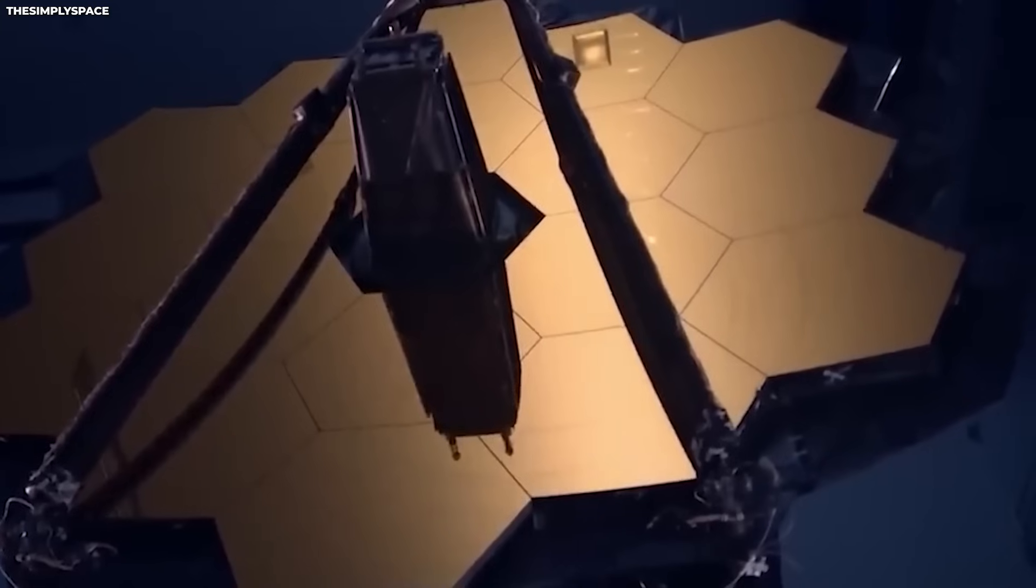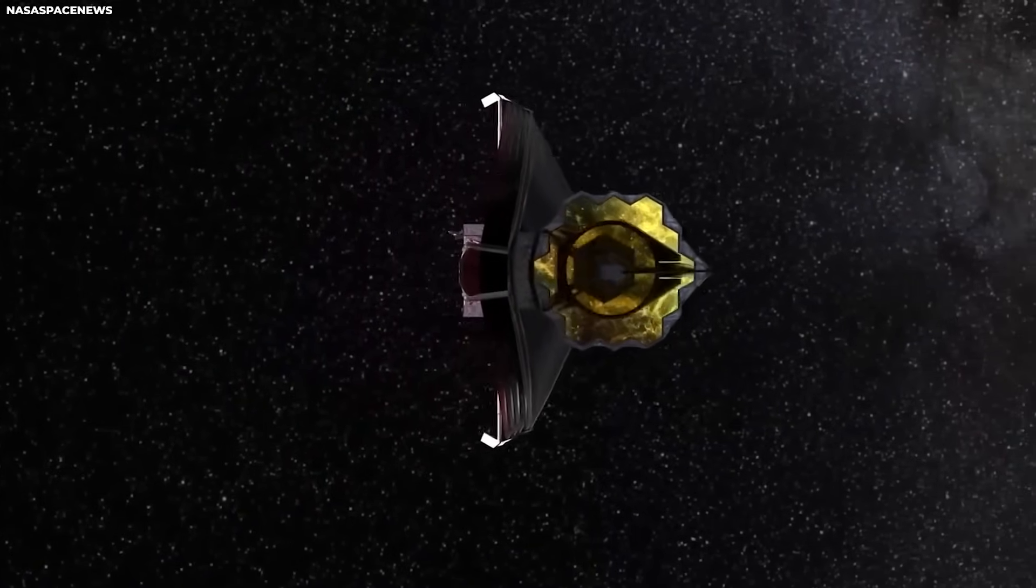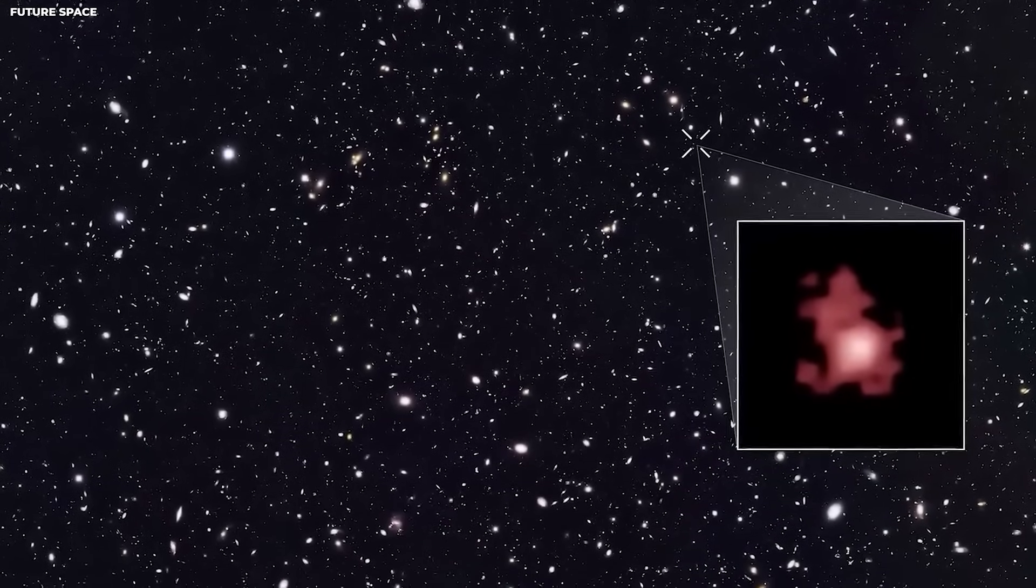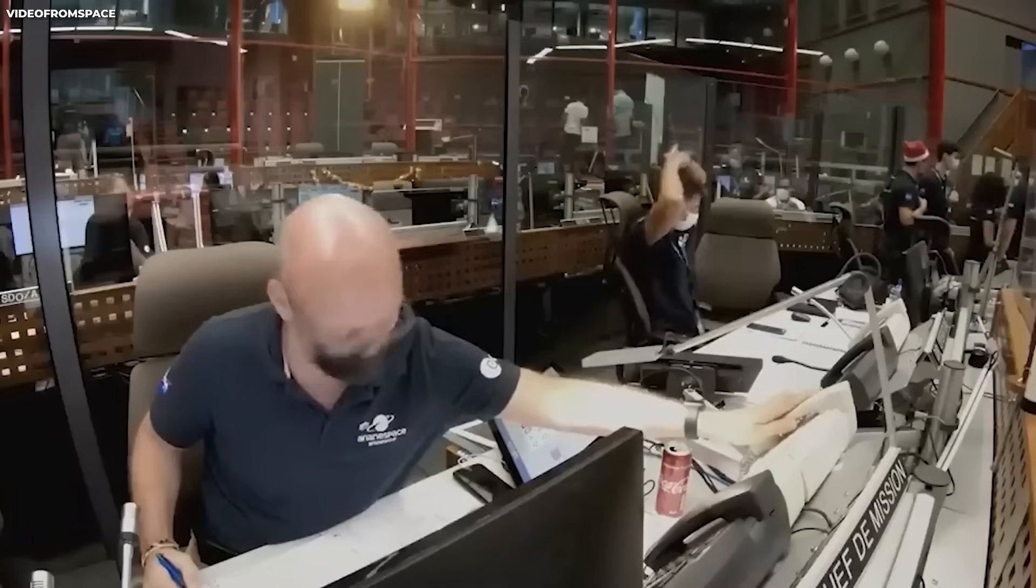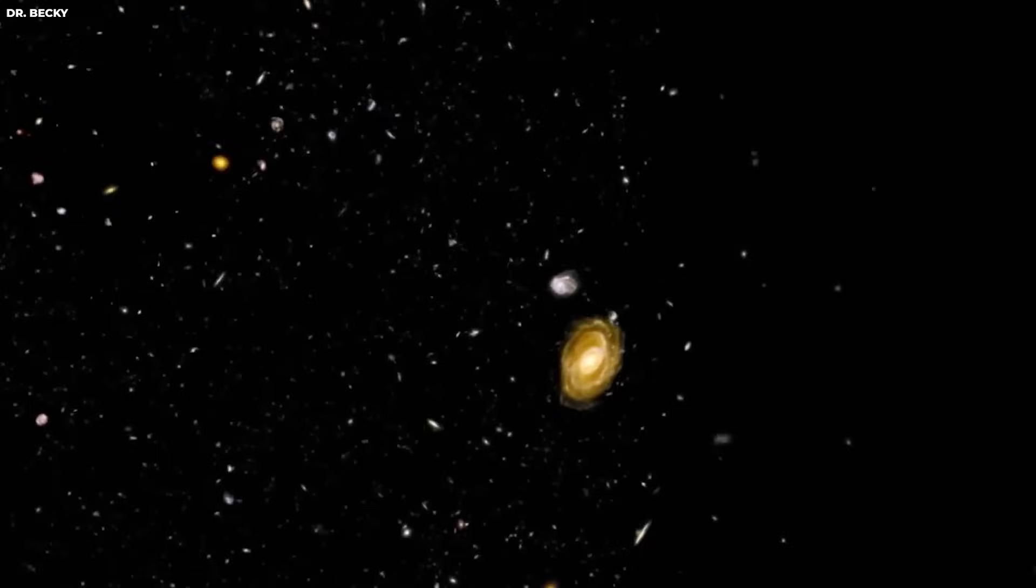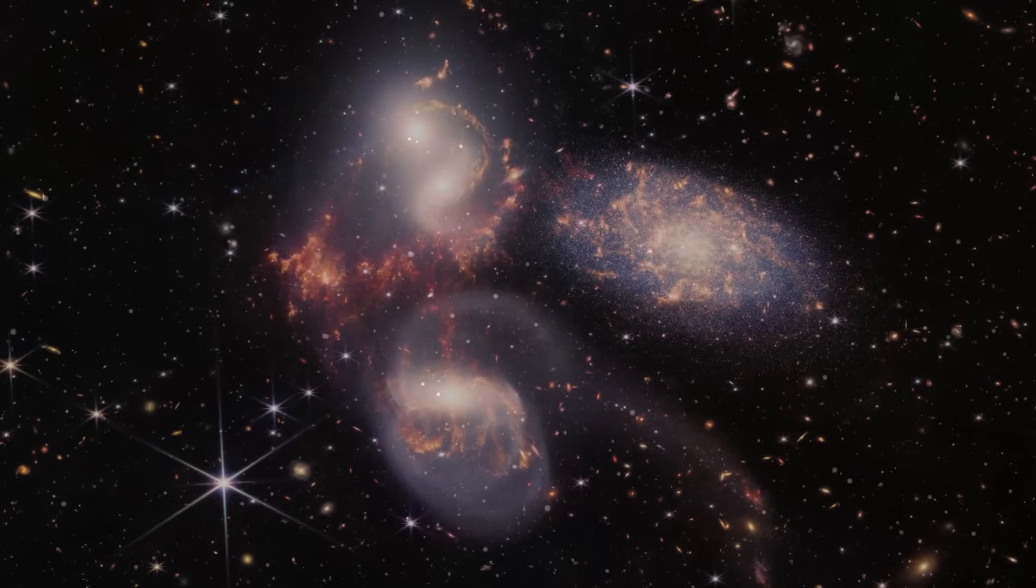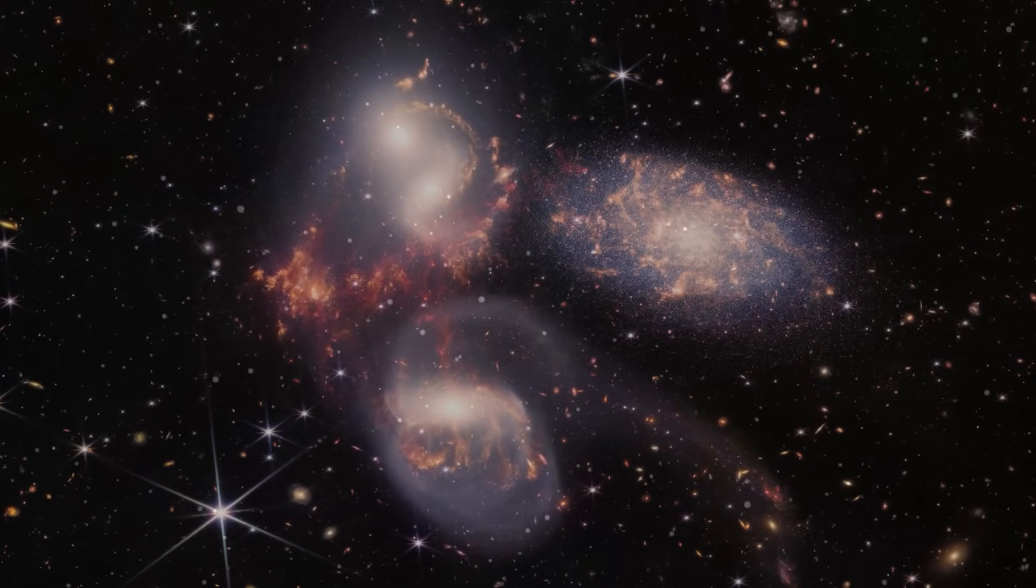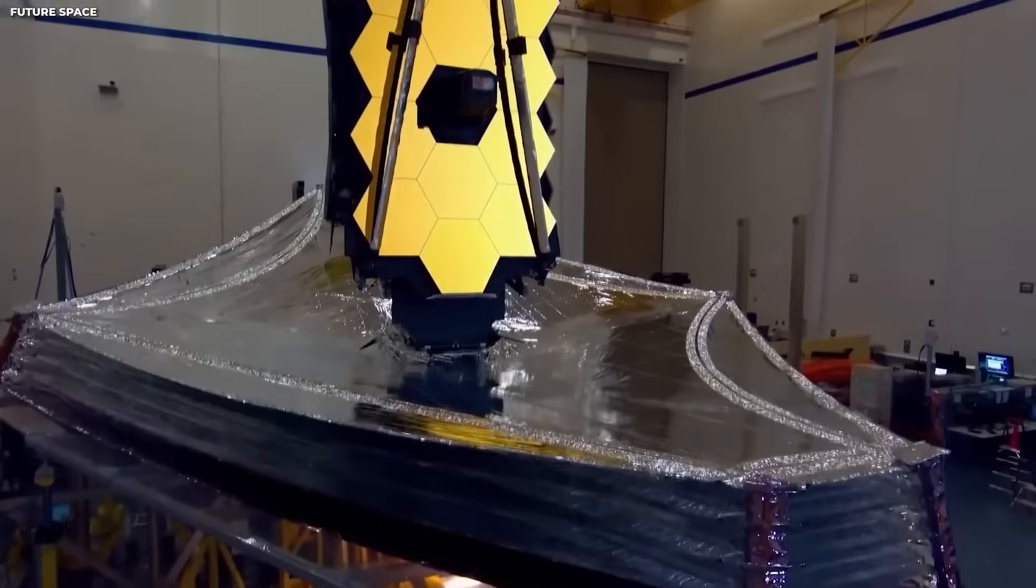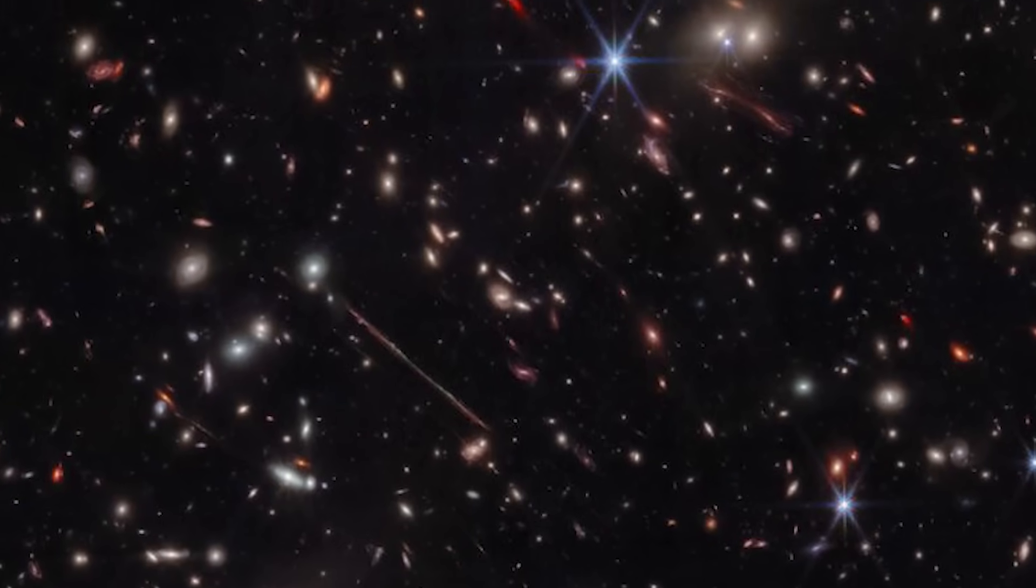Think of it as an advanced night vision security camera for the entire universe. Due to its substantial size, the JWST can gather even more light than other telescopes, enabling us to observe smaller and more distant objects. Being in space eliminates atmospheric interference, making the JWST a superior tool for studying the universe. That's why it is often referred to as the eyes on the universe.